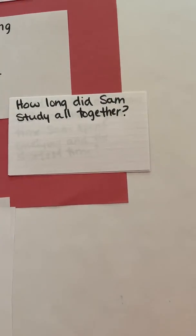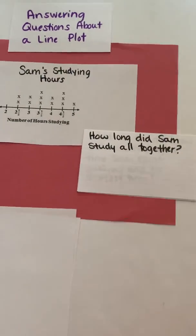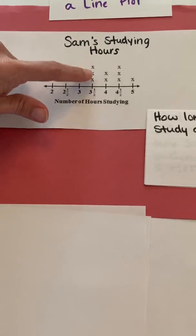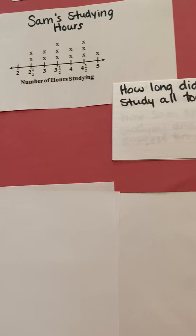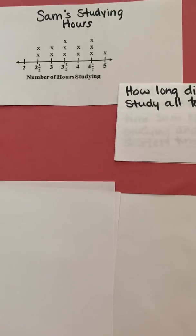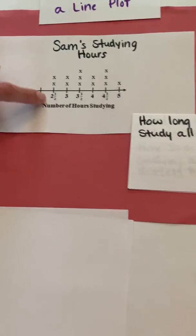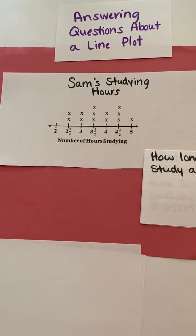All right, another question is how long did Sam study altogether? All right, so if he studied altogether, that basically means that each one of these, we need to take each one of these x's and kind of look at the relationship with the number and we need to combine those. And so anytime we're combining numbers, we're going to be adding. Now we're not going to multiply. The reason we're not going to multiply is we're not combining equal groups. These are all different amounts of groups, so we would need to add here.